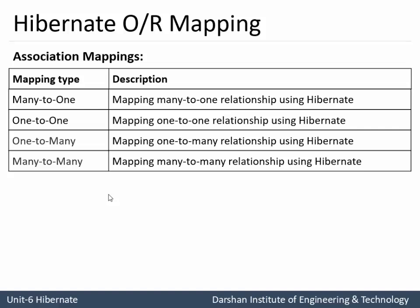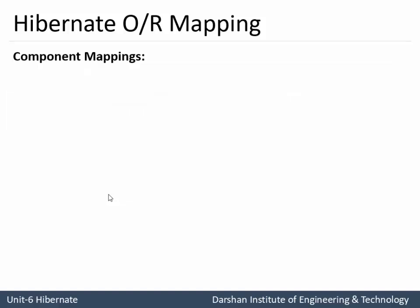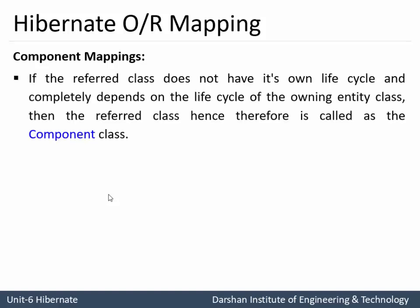The mapping of many-to-many relationships is performed using Hibernate in association mapping. Next is Component Mapping. Here the word component means part of any whole system. For example, a door is a part of a room — if the room is destroyed, then obviously the door is destroyed. Another example: a room is a part of a house, where the house is the whole system and the room is the part, connected with a component-type relationship where the whole is the sole owner. So if the house is destroyed, obviously the room is destroyed. Component mapping in Hibernate refers to when the referred class does not have its own lifecycle and completely depends on the lifecycle of the owning entity class; that referred class is therefore known as a component class.